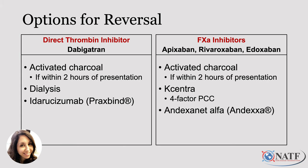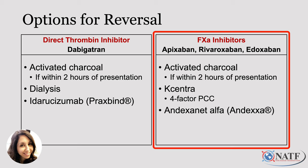If you're on a factor Xa inhibitor — so apixaban, rivaroxaban, or edoxaban — we have two options. The first is K-Centra, which is that four-factor prothrombin complex concentrate we talked about earlier that we actively use to reverse warfarin bleeds. The second is the newer agent that came out just a couple of years ago: andexanet alfa, otherwise known as Andexxa. So we're going to start by talking about the reversal of the direct thrombin inhibitor dabigatran.